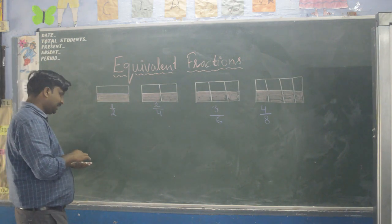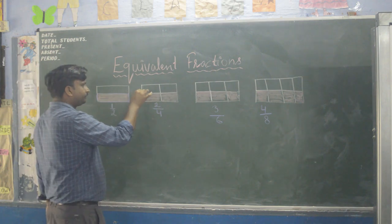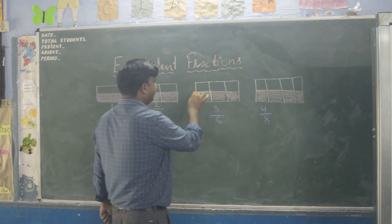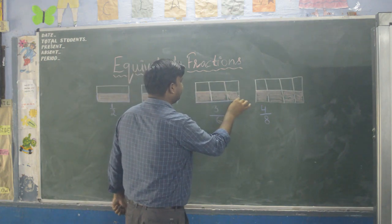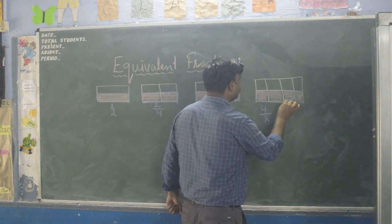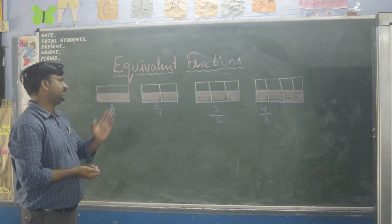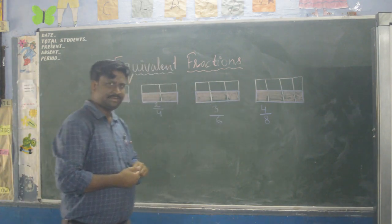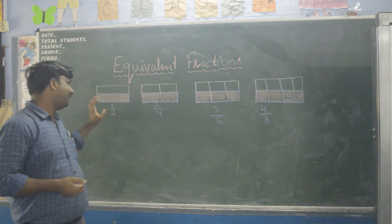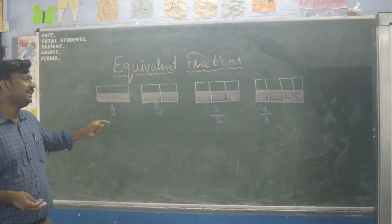Notice that the same portion — almost the same portion — is shaded in all the rectangles. This is half, this is half, this is half, this is half. But expressed as fractions: two upon four, three upon six, four upon eight. Half of the rectangle is shaded in every case — means these are equivalent fractions.